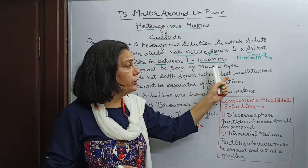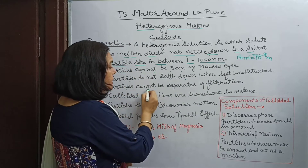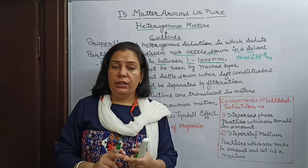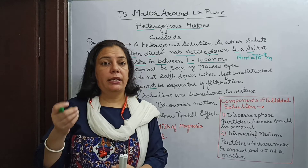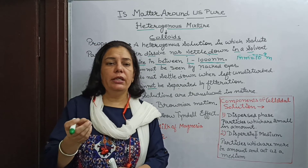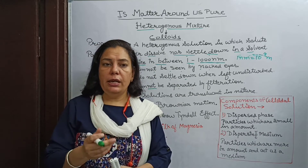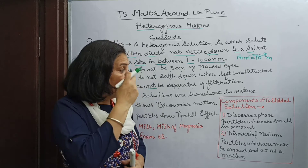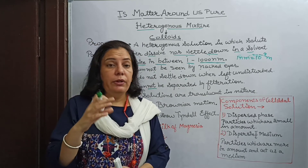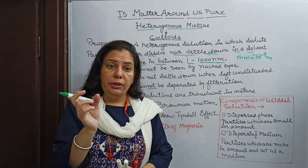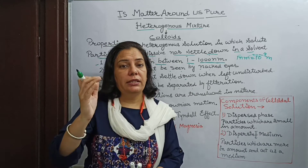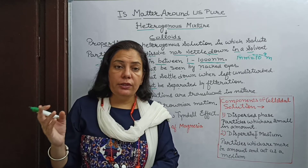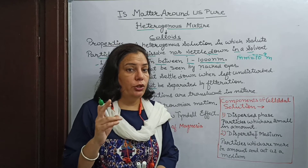Next property: particles cannot be separated by filtration methods. As we can do filtration in suspension — if particles' size is comparatively large, we can filter and separate them. For example, muddy water — we can separate mud from water by filtration. But colloidal particles pass through filter paper, so no residue is obtained when we filter a colloidal solution.